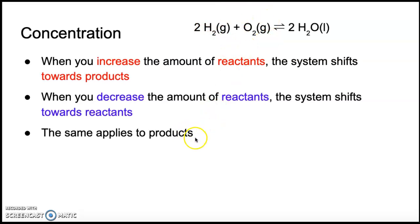The same thing generally applies to products. If you add products, the system is going to shift back towards the reactants to get rid of that extra product. If you take away your product — if you're removing the product as it forms — the reaction is going to shift to make up for that loss and make more product.